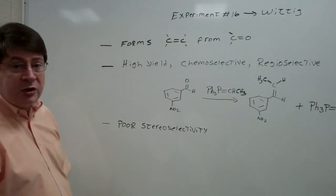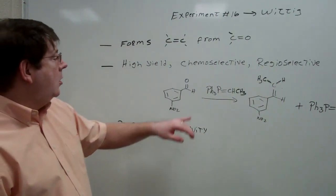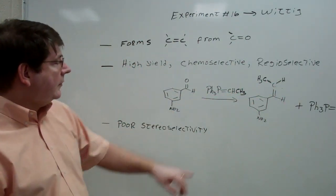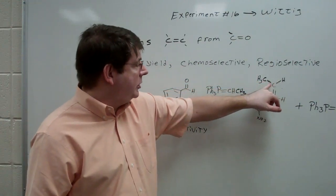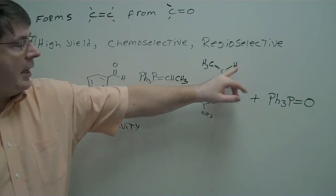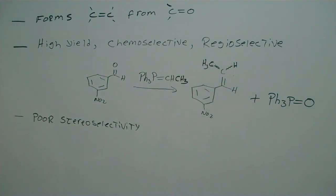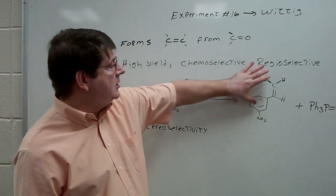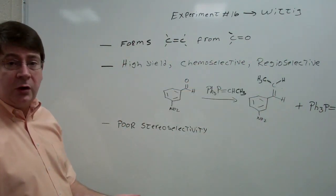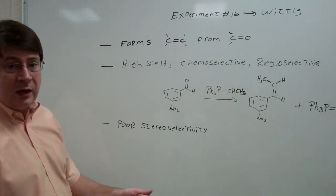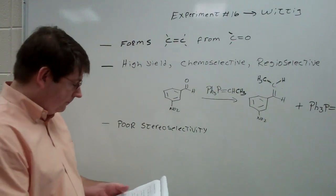However, this reaction does typically suffer poor stereoselectivity. In this example, we've got a methyl group and a hydrogen on this carbon that comes from the ylide. And notice I've used squiggly lines to denote those. The methyl group could either be near the benzene ring, or it could be on the other side and vice versa for the hydrogen. And so usually one ends up with a mixture of both the cis and trans-alkene, in this particular reaction. So that is one of the downsides of the Wittig reaction. But if that's not of concern, then it's a very powerful reaction because it allows us to form these carbon-carbon bonds in both a chemoselective and regioselective fashion.